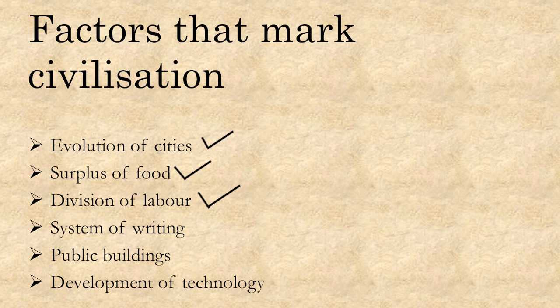People began to explore and invent new things — new skills, new script, using metal for making weapons and implements, seals, etc. Also, he used this newly acquired skill for building monuments and public buildings like citadel, great bath, granaries, dockyards, etc., which we will be learning in this chapter.